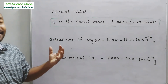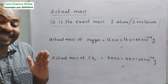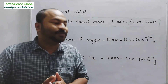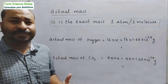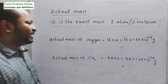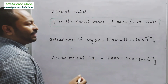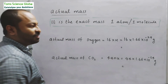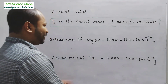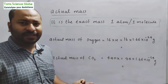The next topic is actual mass. Actual mass is the exact mass of one atom or one molecule. For example, the actual mass of oxygen: oxygen has atomic mass 16, so actual mass = 16 × u = 16 × 1.66 × 10⁻²⁴ grams. The actual mass of carbon dioxide: its molecular mass is 44, so actual mass = 44 × u = 44 × 1.66 × 10⁻²⁴ grams.